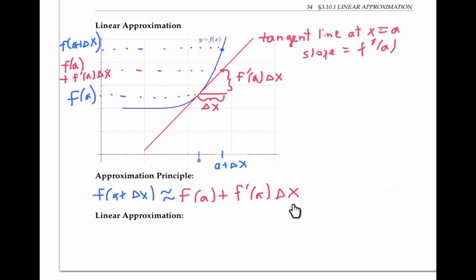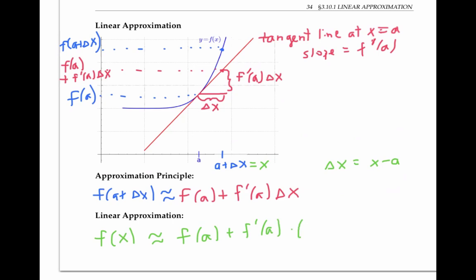Remember that delta x is supposed to be a small number, because if you get too far away from a, your tangent line is no longer going to be a good approximation of your function. But how small is small enough is sort of a judgment call. Sometimes the approximation principle is written with different symbols. If we let x equal a plus delta x, so x is a number close to a, then delta x is x minus a. And we can rewrite the approximation principle as f of x is approximately f of a plus f prime of a times x minus a.